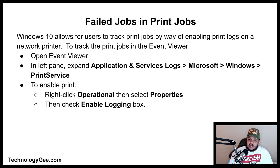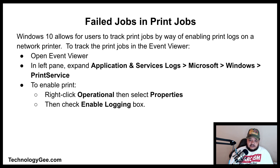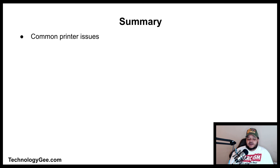Finally, let's talk about failed jobs and print logs. Windows 10 allows users to track print jobs by enabling print logs on a network printer. To track print jobs in Event Viewer, open Event Viewer, expand Applications and Services Logs, then Microsoft, then Windows, then Print Services. To enable print logging, right-click Operational, select Properties, and check the Enable Logging box.